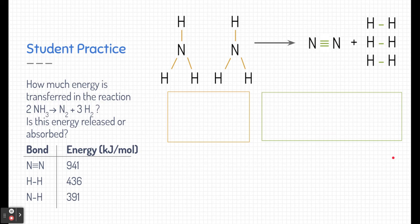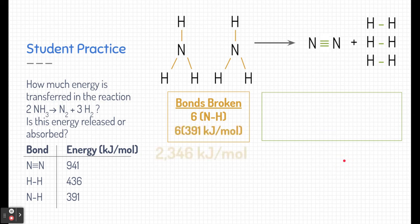Did you try this reaction yourself? I hope so. Let me go ahead and show you how this works. Let's first calculate the bonds broken. I see that there are six single bonds between nitrogen and hydrogen. And if I use my table and add up all of those bonds together, I can get the total amount of energy that it takes to break these bonds.